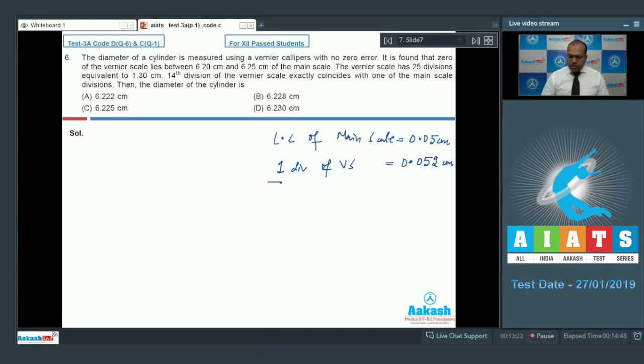So if I take the difference in these two readings, the difference will come out to be 0.002 cm. Since it is a regressive reading, so the final reading in order to find out the diameter of this cylinder can be written as: